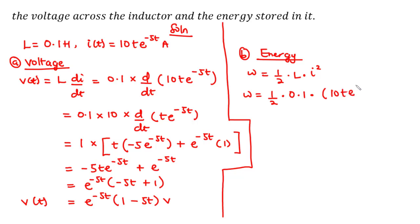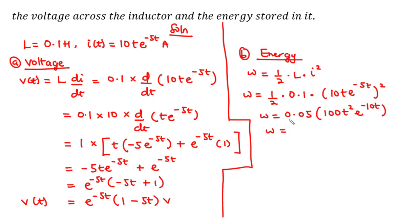Expanding: ½ × 0.1 = 0.05, and 10² = 100, giving 0.05 × 100 × t²·e^(−10t). Since 0.05 = 5/100, the 100s cancel, leaving w = 5·t²·e^(−10t) joules. This is the energy stored in the inductor. Now let's move on to the second question.